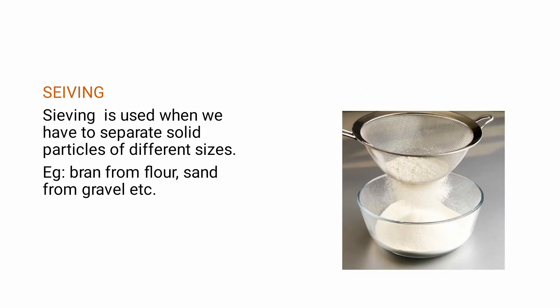Next is sieving. The process of separating solid particles of different sizes is called sieving. Examples include bran from flour, and sand from gravel. We have seen this in construction sites where a sieving slab is placed slantingly and mixed sand is thrown on it. The fine sand comes out the other side, and the coarse sand falls on the same side where it was thrown.